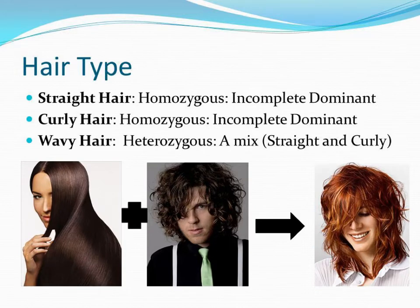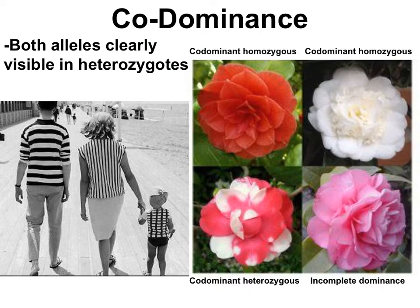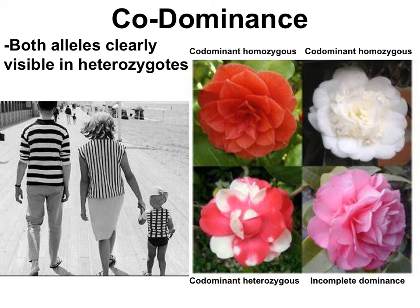Our second exception to Mendelian genetics is co-dominance. Co-dominance is when heterozygotes show evidence of both alleles. A fun analogy: the dad is wearing horizontal stripes and the mom is wearing vertical stripes. Their baby shows both phenotypes simultaneously — horizontal stripes and vertical stripes. With co-dominance you see both stripes, whereas incomplete dominance would be if the child had diagonal stripes.